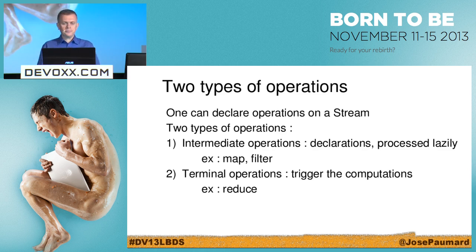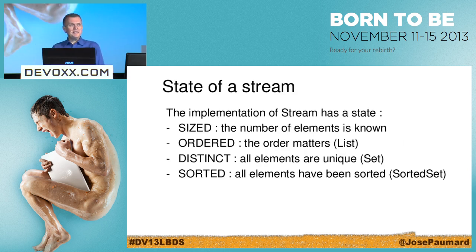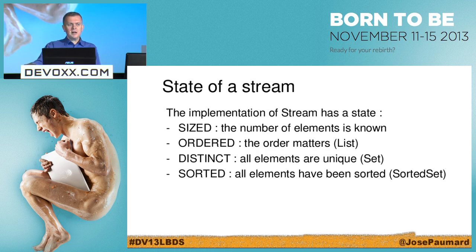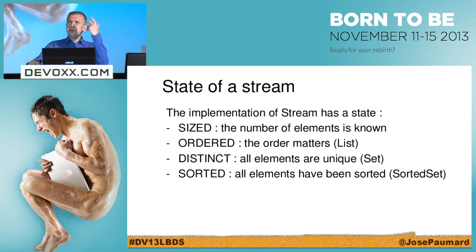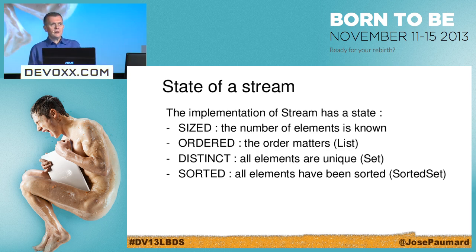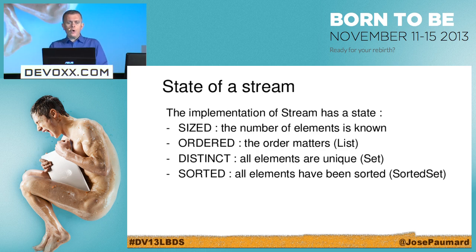Since when the terminal operation is triggered the stream has complete knowledge of all the operations declared on it, it can optimize things — laziness of course being the first optimization. The stream has a state — it doesn't hold any data in the sense that there are no persons in my stream, but it still has a state, and this can have a huge impact on performance. The first state flag is 'sized' — meaning I know how many elements this stream will pull from the source. If my stream is built on a list, I know how many elements there are.